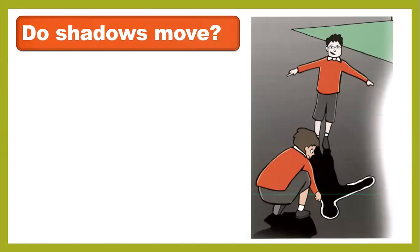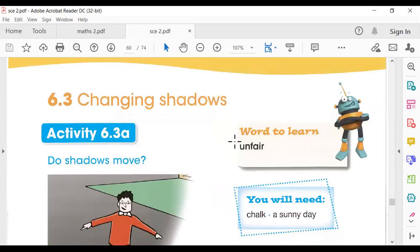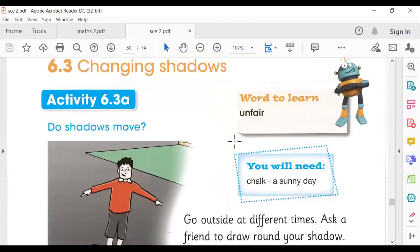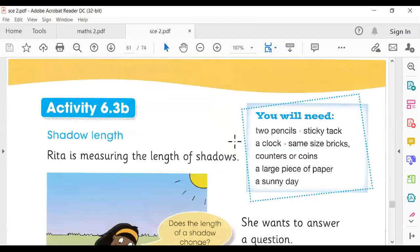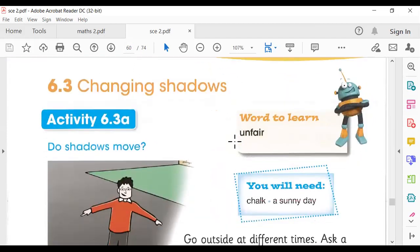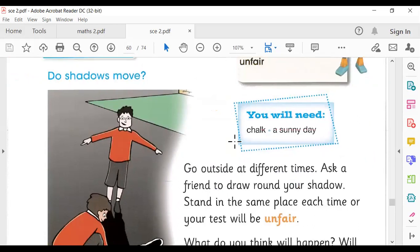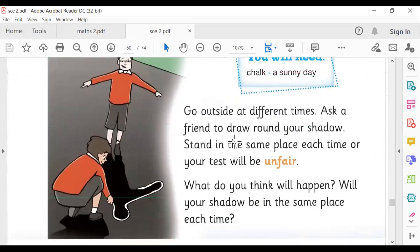I'm going to show you the learner's book. This is Activity 6.3a and 6.3b. You need a friend to do this activity. You have to go outside at different times during the day and ask a friend to draw around your shadow. You need chalk or a marker to draw around your shadow.